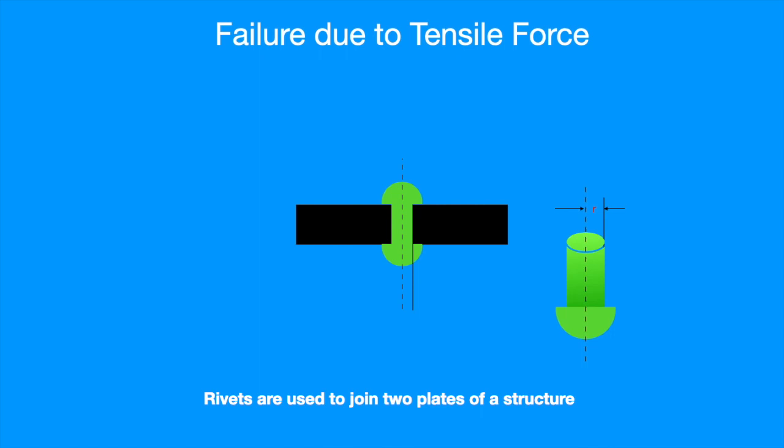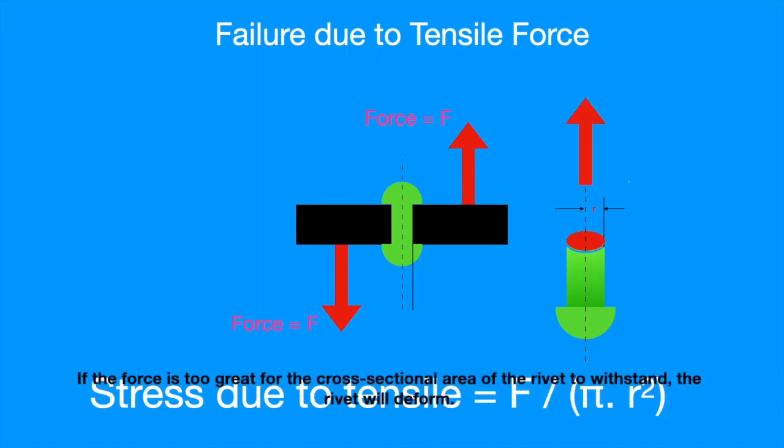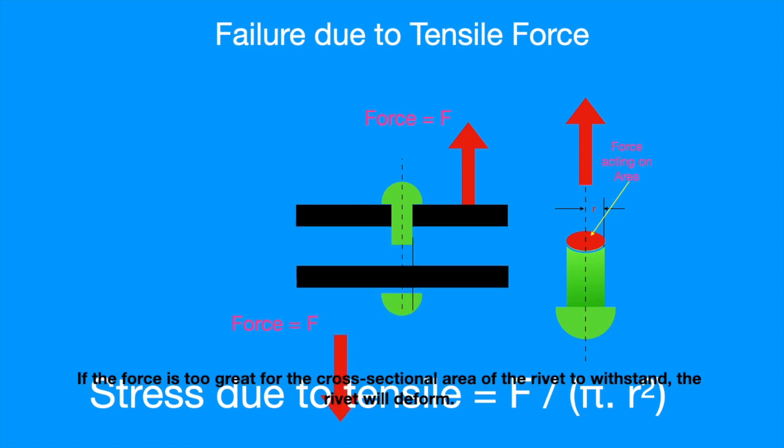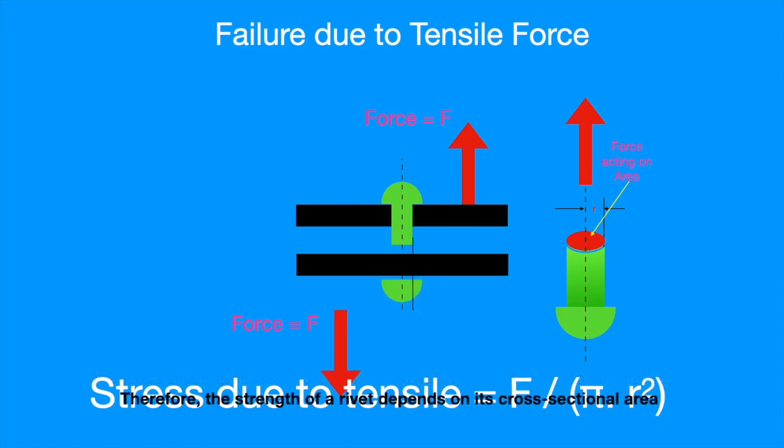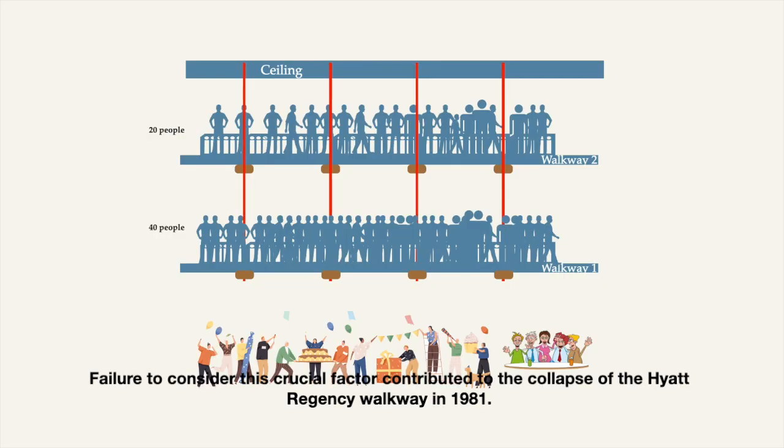Rivets are used to join two plates of a structure. When an axial force is applied, the rivet's cross-sectional area is subjected to the force. If the force is too great for the cross-sectional area of the rivet to withstand, the rivets will deform. Therefore, the strength of a rivet depends on the cross-sectional area, which is calculated as pi times the square of the radius.